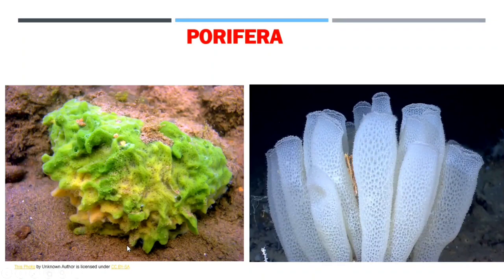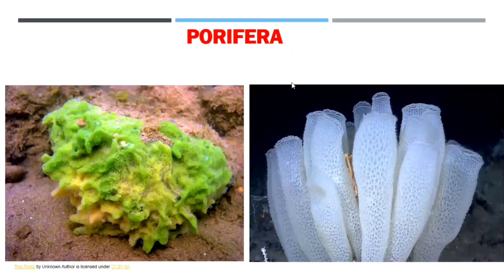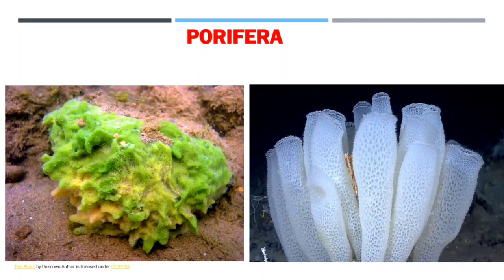Some examples of this phylum are Euplectella, Sycon, and sponges. The body design of these animals involves very minimal differentiation and organization of tissues. There are no specialized tissues in these animals, but some differentiated cells are present performing different functions.